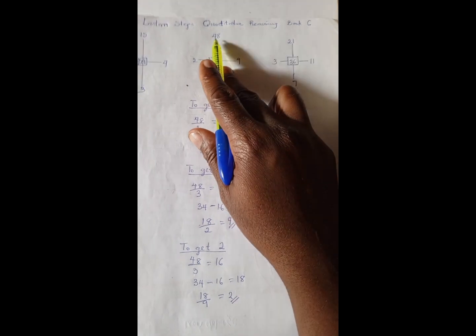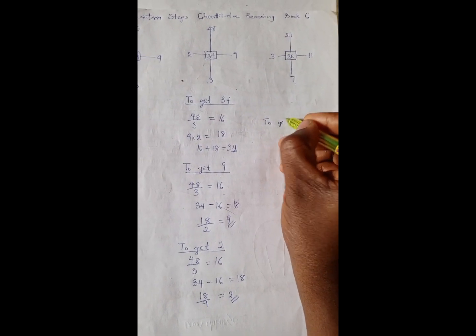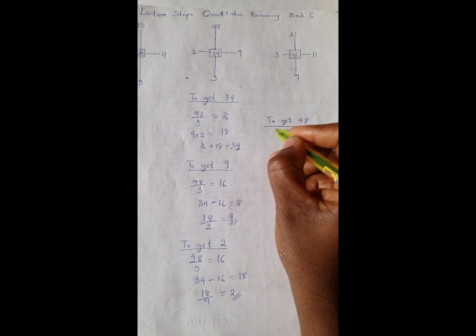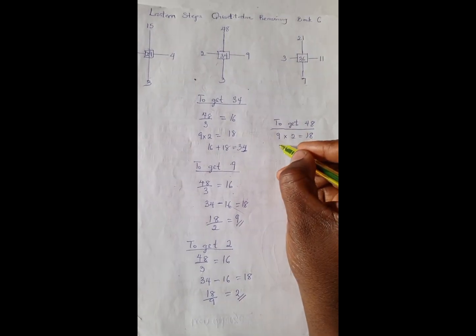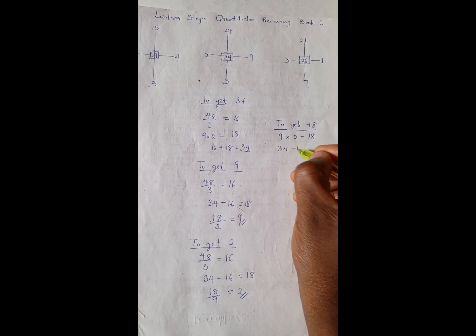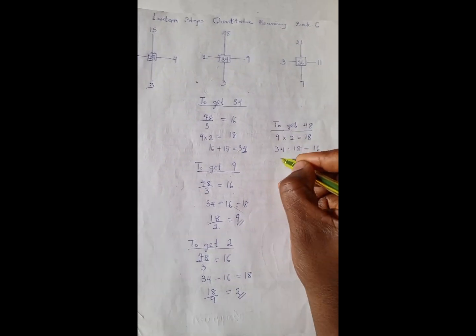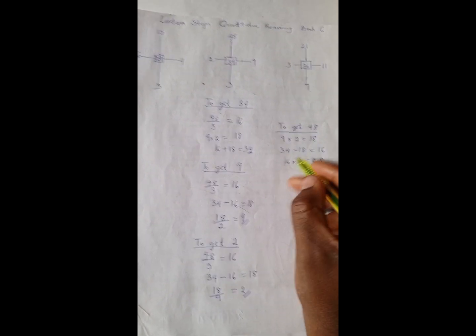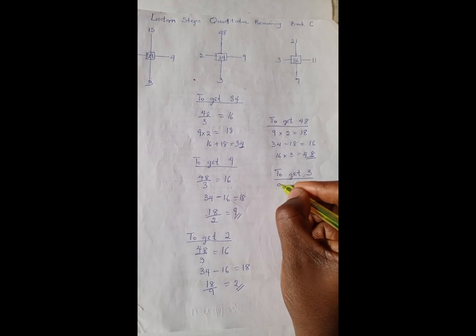So let's try to get 48. You can do it here. So to get 48, we have 9 times 2 is 18. 34 minus 18 is 16. 16 times 3 is 48. So let's get 3. So to get 3, we have 9...